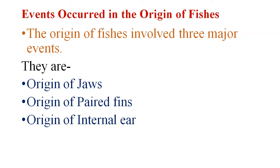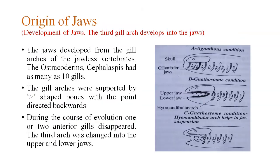What events occurred in the origin of fishes? The origin of fishes involved three major events: the origin of jaws, the origin of paired fins, and the origin of internal ears.